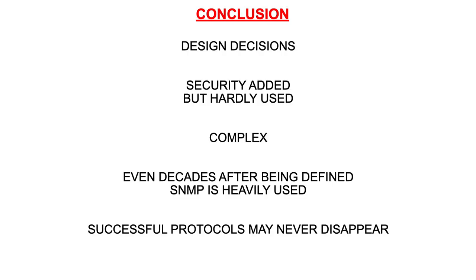This brings us to the end of our tutorial on the architecture of SNMP as standardized for version 3. We have tried to explain the main design decisions as well as some basic concepts and ideas. SNMP version 3 introduces the possibility to perform secure SET and GET operations. In practice, however, encryption and authentication are hardly used, due to the complexity of making SNMP secure. Still, SNMP is heavily used for unencrypted retrieval of management data. Most managers have closed the ports used by SNMP — UDP ports 161 and 162 — to the outside world. What is probably the most important lesson is that protocols that become successful may never disappear, and protocol decisions made decades ago may still have impact on current networks.